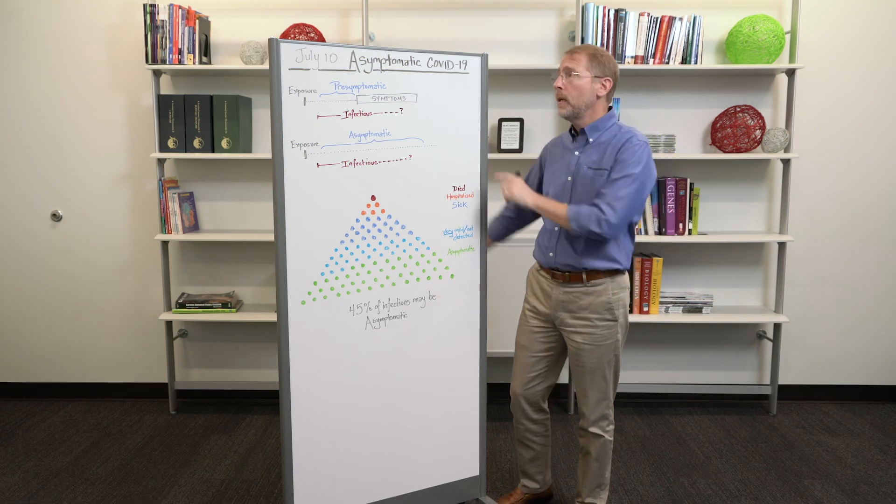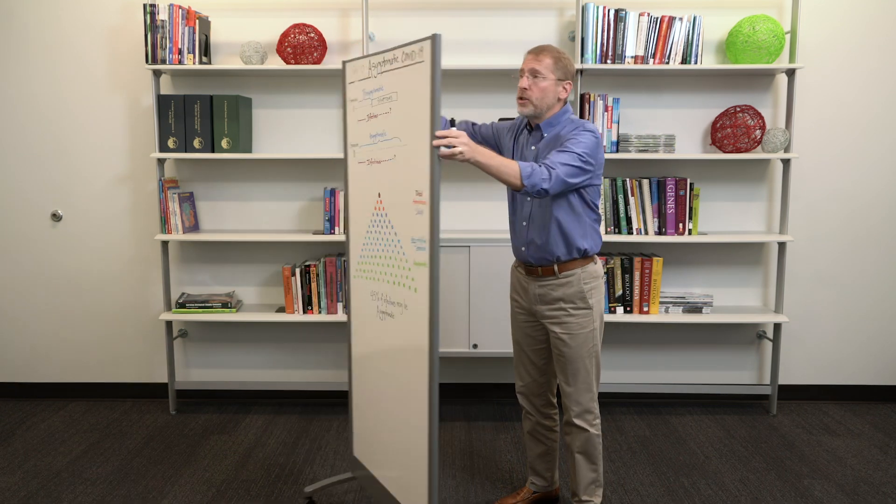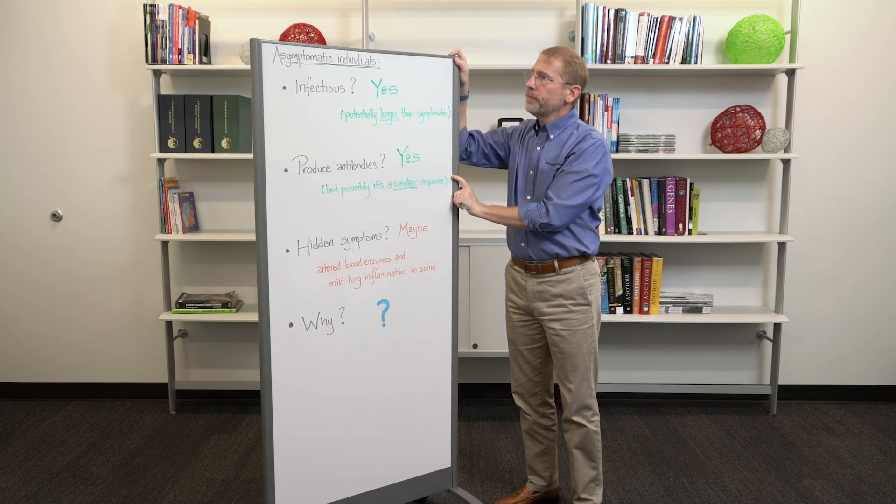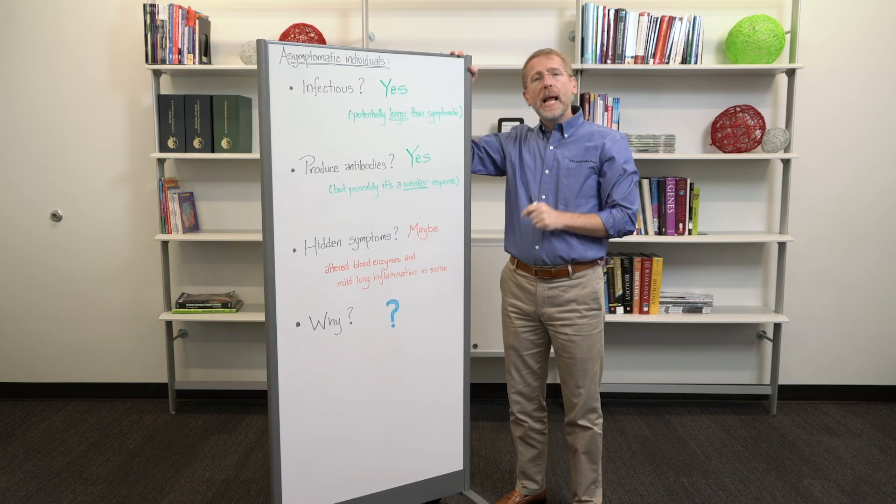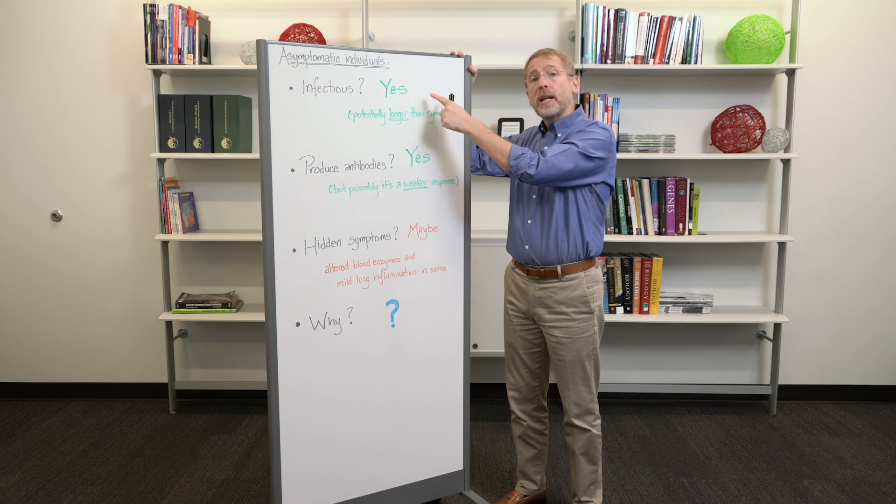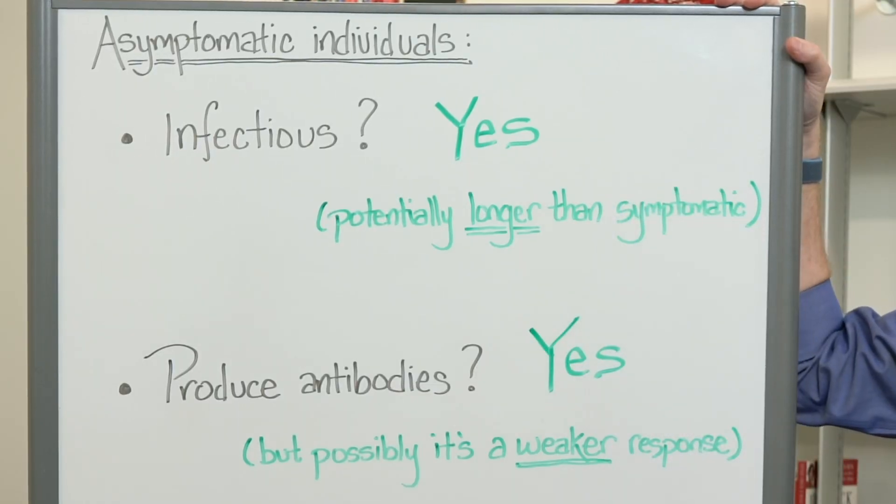All right, with that in mind, let's look at some basic questions. Are asymptomatic individuals infectious? Yes. So even if they don't realize they have symptoms, they can pass the infection on to someone else.